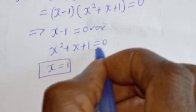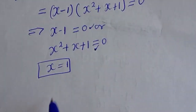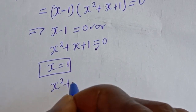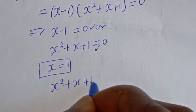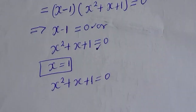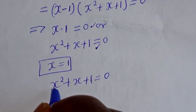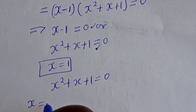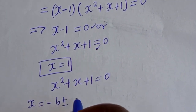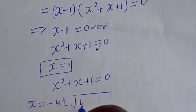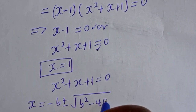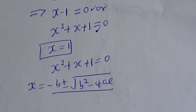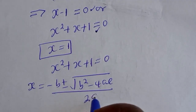And from the second case, this is a quadratic equation: s squared plus s plus 1 is equal to 0. Let's solve this using the quadratic general formula. s is equal to minus b plus or minus square root of b squared minus 4ac, all over 2a.